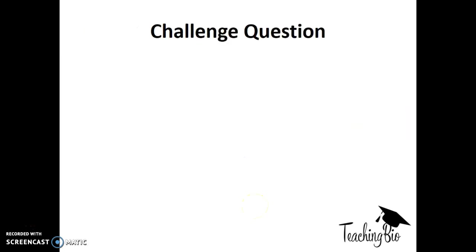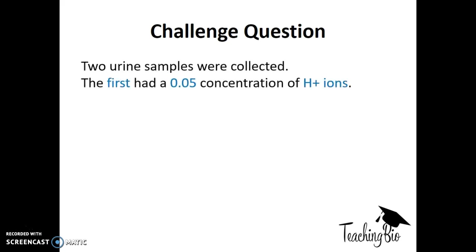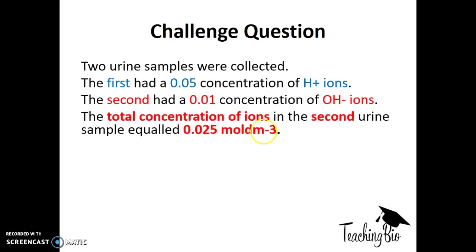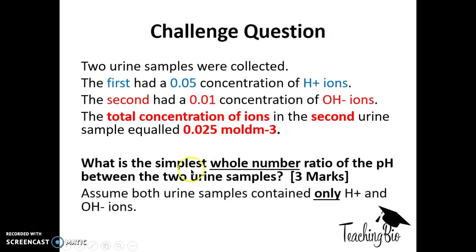Here's a challenge question for you to try. Two urine samples were collected. The first had a 0.05 concentration of H+ ions. The second sample had a 0.01 concentration of OH- ions. The total concentration of ions in the second urine sample equaled 0.025 moles per decimeter cubed. What is the simplest whole number ratio of the pH between the two urine samples? Assume both urine samples contain only H+ and OH- ions. Pause the video and have a go.